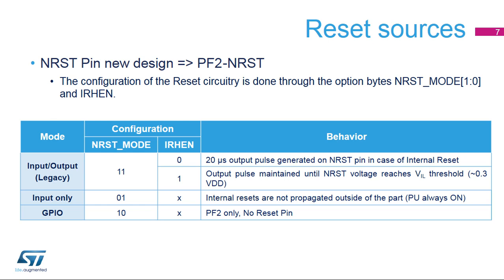Two fields in the option bytes are used to configure the NRST pin. NRST mode selects the operation mode of the NRST pin: input or output reset, input-only reset, or GPIO. IRHEN stands for internal reset holder enable. When this mode is enabled, the NRST pin is driven low until its voltage level goes under the voltage input low threshold.